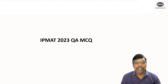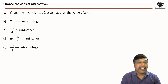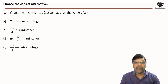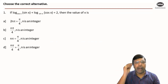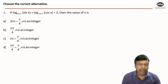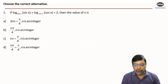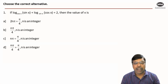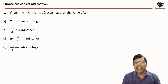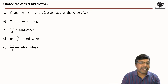The very first question is an interesting one because it combines the concepts of logarithms and trigonometry. It is given that log sin x base cos x plus log cos x base sin x is equal to 2, and we are to find the value of x.